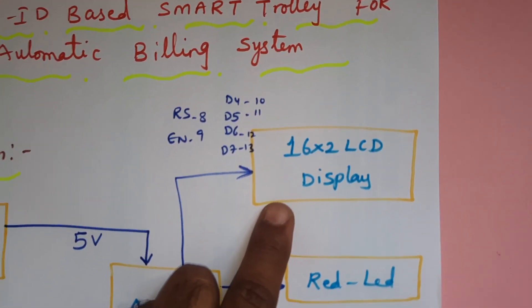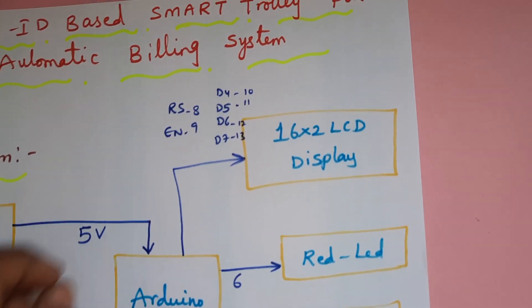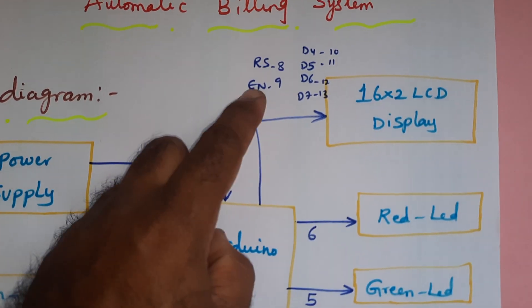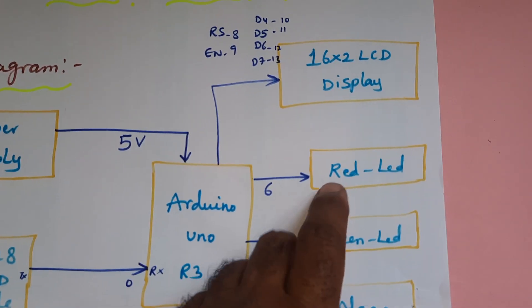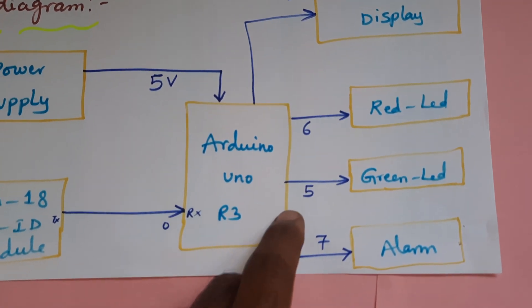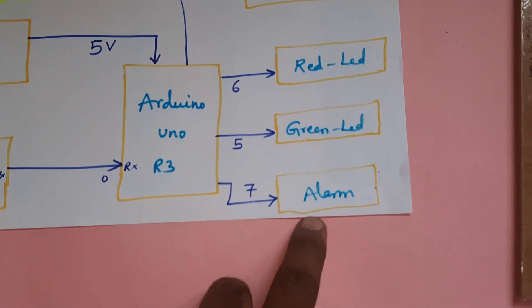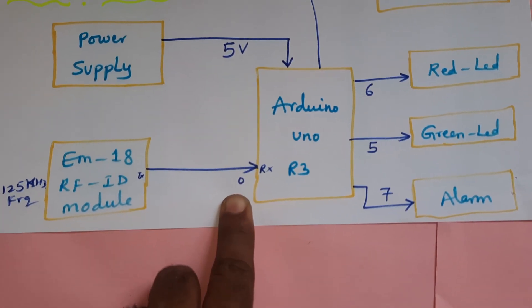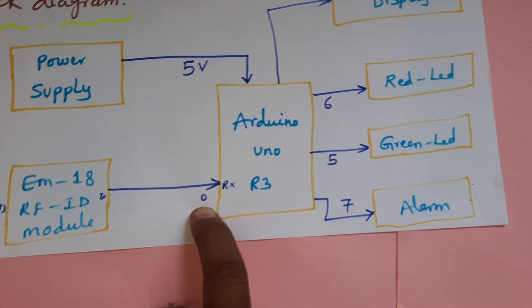16x2 LCD display with RS, enable, D4, D5, D6, D7 pins connected to pins 8, 9, 10, 11, 12, 13. Red LED is connected to GPIO sixth pin, green LED is connected to fifth pin, and alarm is connected to seventh pin. EM18 RFID module is connected to the receiver pin zero.